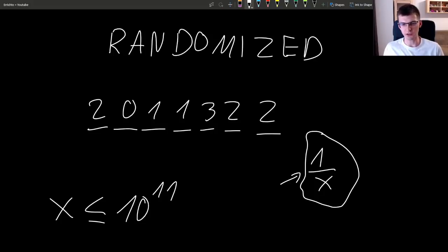If you see a constraint like x is up to 10 to the 11 or 10 to the 12 you should often think about complexity of square root of x. And something related to square root of x and randomized algorithms is birthday paradox.